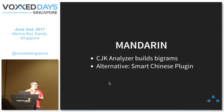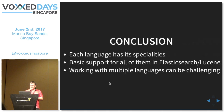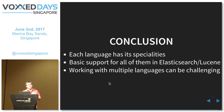The CJK analyzer works for simple cases and is easy to use, but there is also an alternative: the Smart Chinese plugin. It is smarter — it uses probabilistic approaches and comes with a training model that can determine words, so it's supposed to work better but needs to be installed as a plugin. As a conclusion, each language has its specialities in Singapore but there is basic support for all of them in Elasticsearch. Working with multiple languages can be challenging — there are several things to consider, like where to store different languages, whether to use separate indexes or separate fields, and even determining what language the user is using can be difficult.